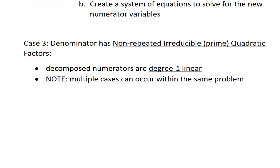In this particular case — Case 3 — the denominator has non-repeated irreducible, which means prime, quadratic factors. One big difference from the first two cases is that now the decomposed numerators are degree one linear.